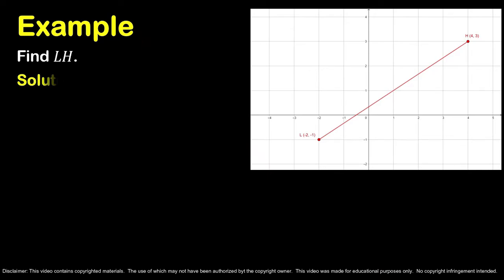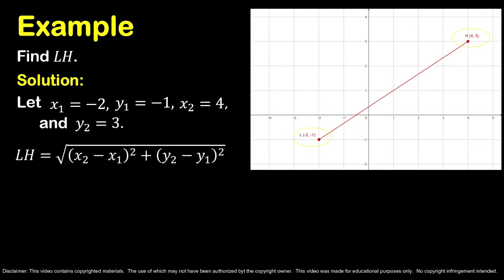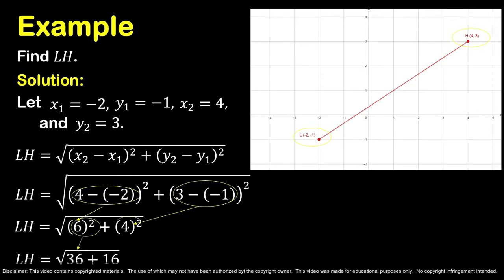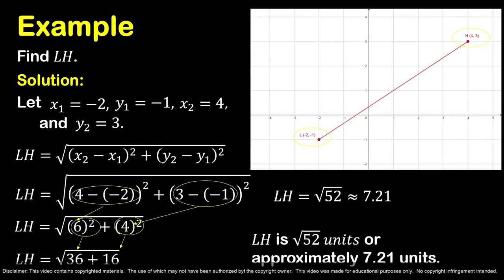Let us have another example. Find the measurement of line segment LH. Identify first the coordinates of the endpoints: point L is at (−2, −1) and point H is at (4, 3). Let x₁ equal −2, y₁ equal −1, x₂ equal 4, and y₂ equal 3. Use the distance formula and substitute the values, then simplify. 4 minus −2 is 6, and 3 minus −1 is 4. 6 squared is 36, and 4 squared is 16. The square root of 52 is approximately 7.21. Therefore, the measurement of line segment LH is √52 units, or approximately 7.21 units.